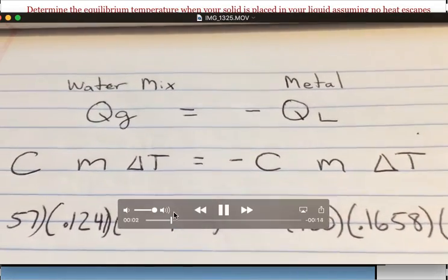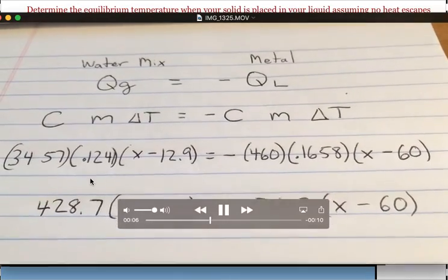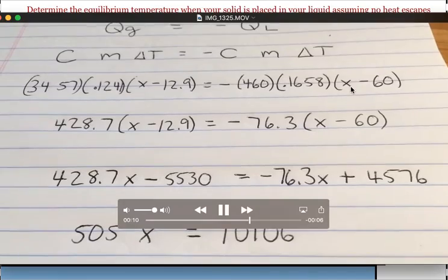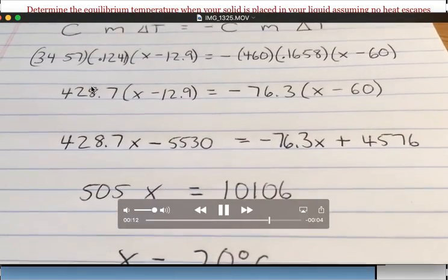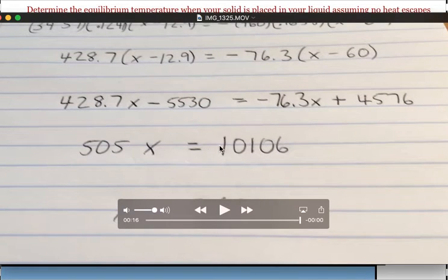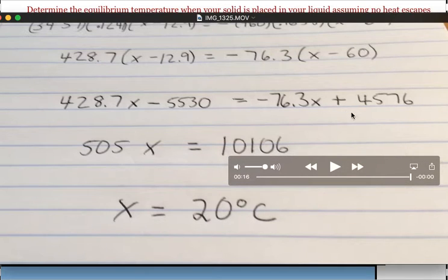So then we take the numbers from our problem and we plug them in. You'll notice the final temperature of both the water and the metal is x. We multiply, we distribute, we gather our terms, and we find that our final answer will be 20 degrees Celsius.